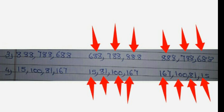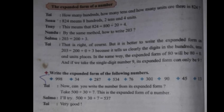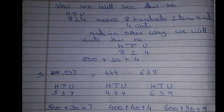Now we will move to the next topic — expanded form. In expanded form, we see how many hundreds, how many tens and how many units are there. We will take the number 824. Now children, 4 we will write in units place, 2 we will write in tens place, and 8 we will write in hundreds place. So 824 means 800, two tens and four units. This means that 824 is equal to 800 plus 20 plus 4.